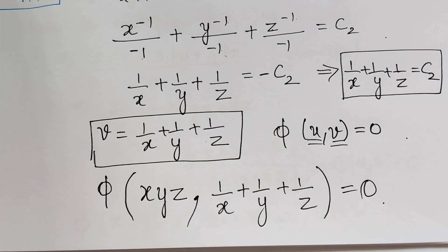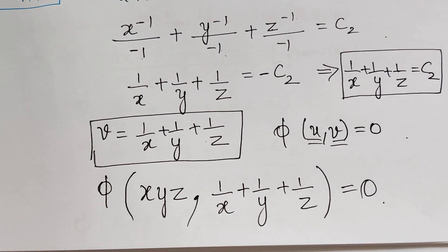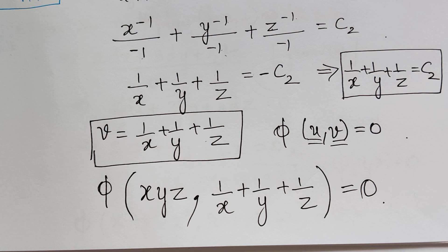I hope you have understood this problem. With this, we are completing the concept of the method of multipliers. Previously, we learnt to solve Lagrange's equation by the method of grouping, and now by the method of multipliers. The upcoming problems will make use of both methods in the same problem — grouping for one solution and multipliers for the other — completing this series of lectures on Lagrange's partial differential equation. Thank you.